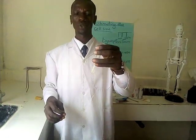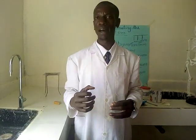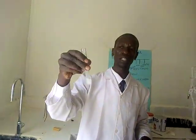Procedure number two: add two centimeter cubed of ethanol into the solution. Remember, ethanol has the ability to dissolve fats. So if fats is present in this solution, ethanol will dissolve it so that it will be suspended onto the water.